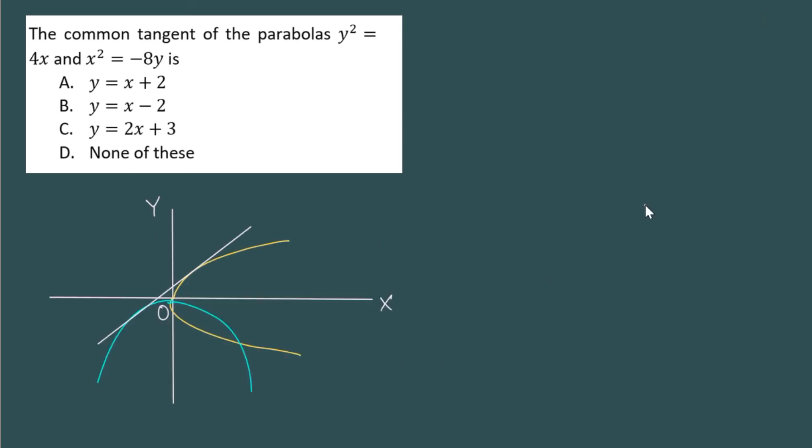So I have drawn the parabolas roughly. This parabola which is opening to the right along x-axis is y square equal to 4x. And the one which is opening downwards along y-axis is x square equal to minus 8y. So this is the tangent here, this is a common tangent.